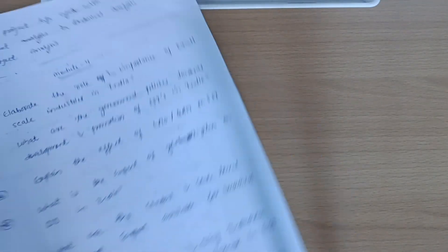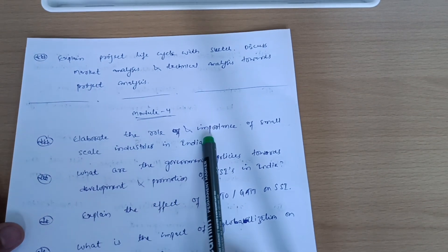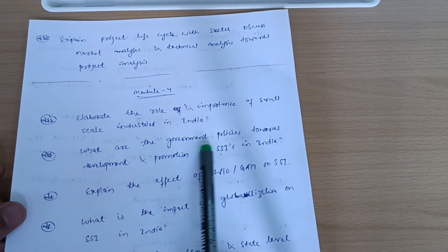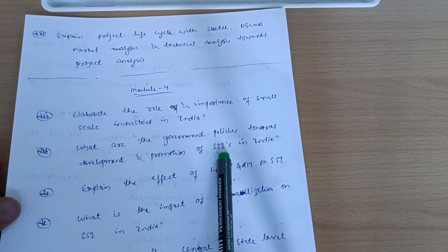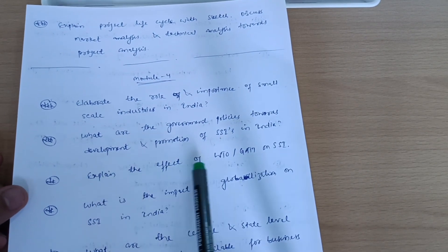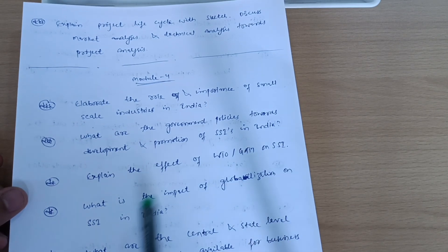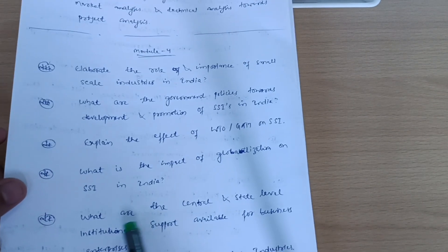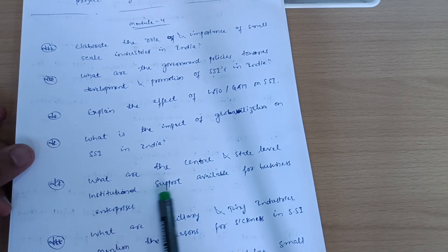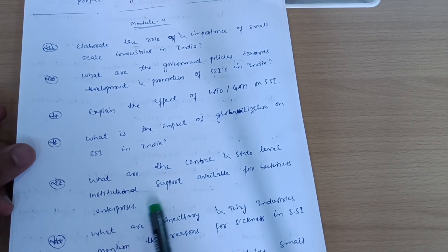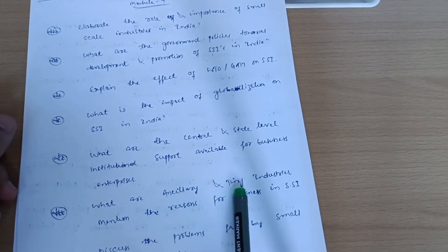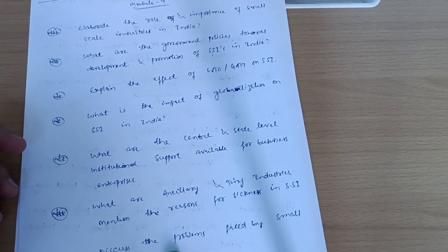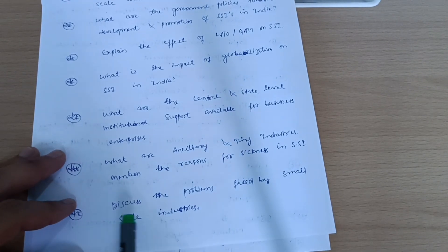Now at last I will discuss here Module 4. Elaborate the role and importance of small-scale industries in India. What are the government policies towards development and promotion of small-scale industries in India? Explain effect of WTO and GATT on SSI. What is the impact of globalization on small-scale industry in India? What are the central and state level institutional support available for business enterprises? What are ancillary and tiny industries? Mention the reasons for sickness in small-scale industries. Discuss the problems faced by small-scale industries.